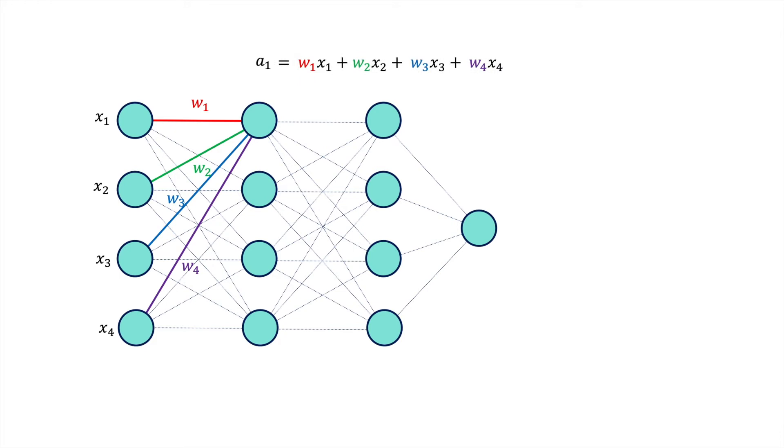Effectively saying that this hidden layer output is determined through a general function applied to the input values x1 to x4. This function can be seen as being parameterized by the weights in the network, as w1, w2, w3, and w4 are all fixed beforehand.